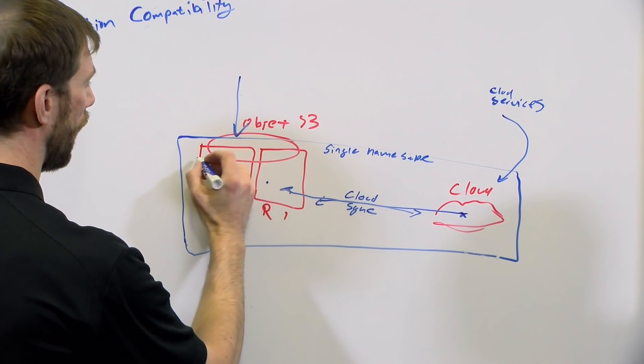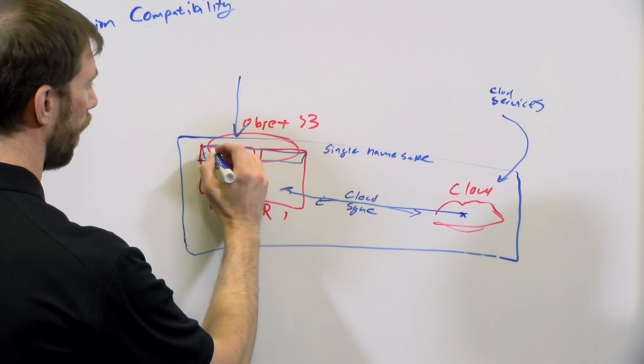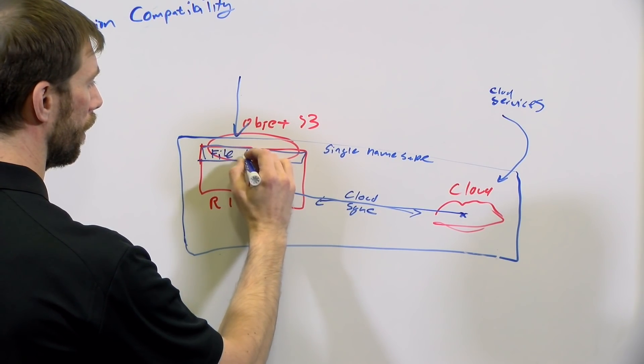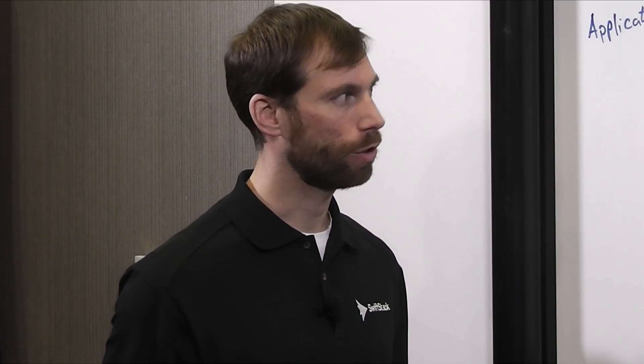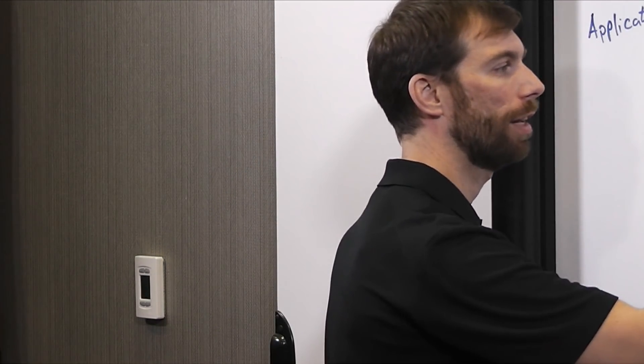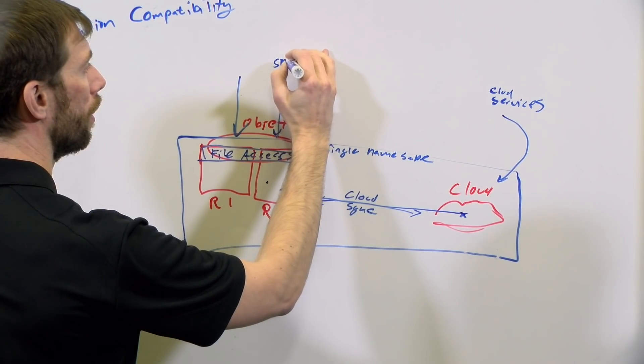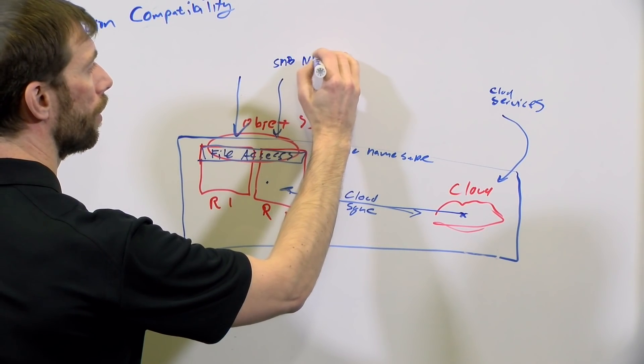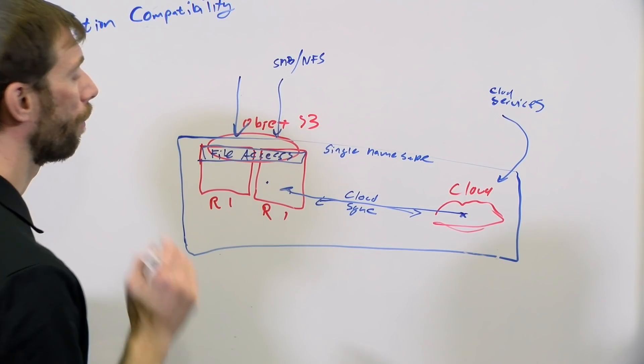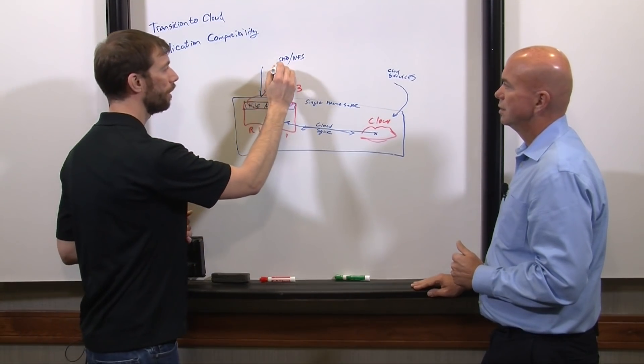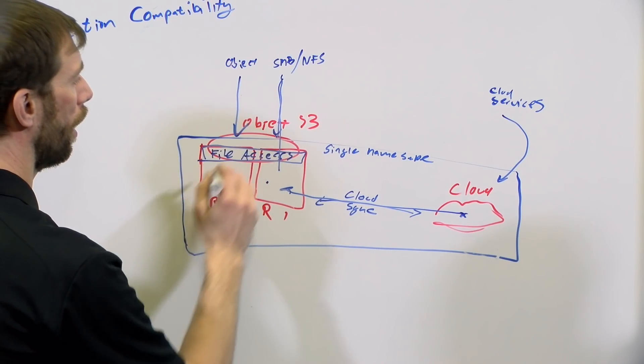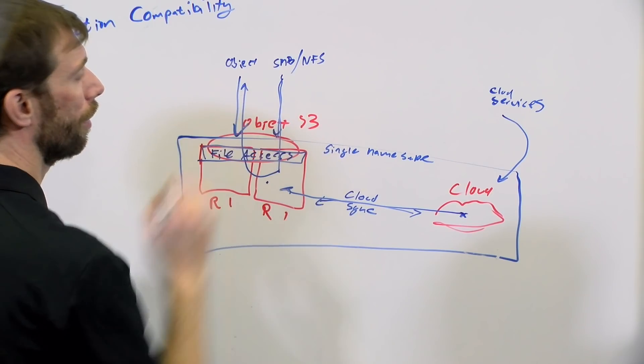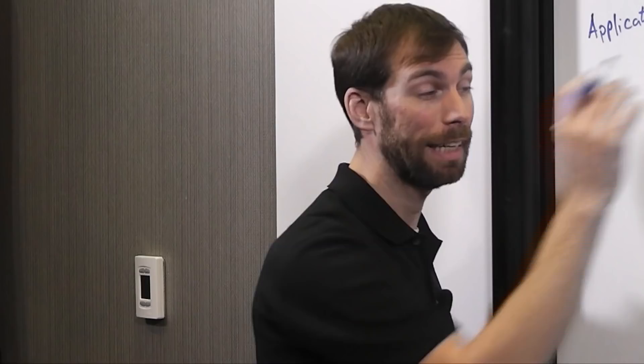And so what we've done is we have integrated file access into the core storage system. There's no gateway. It runs on the same infrastructure and that presents an SMB or NFS protocol for the same data. And that's what's really important. Data can go in via the SMB, and it can come out via the object or vice versa. It is the same data.